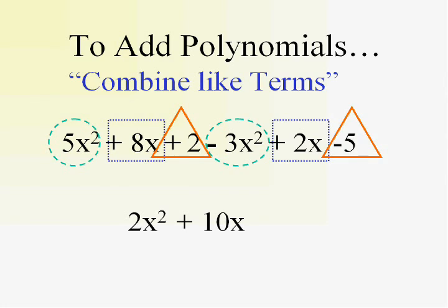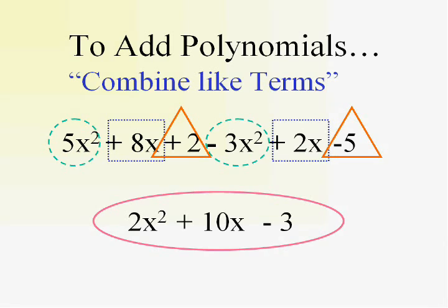And then the numbers just get together. Two and negative five, you know how to add integers, get negative three. And there it is. You have to know when to stop also.